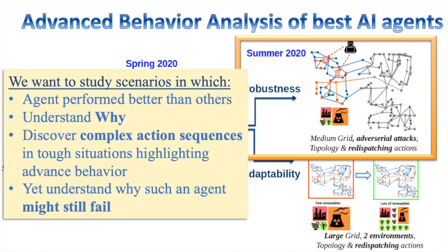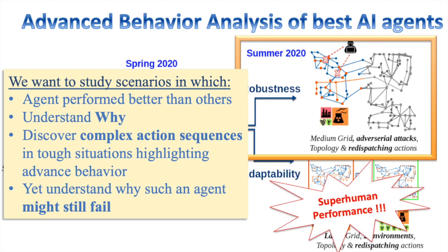In our behavior analysis, we want to study scenarios in which agents perform better than others to find interesting differences in behavior, understand why, discover complex action sequences in tough situations highlighting advanced behavior, and yet understanding why such an agent might still fail. We'll see that the best agent actually demonstrates some superhuman performance at some point, which is really impressive.